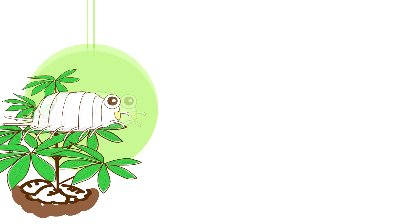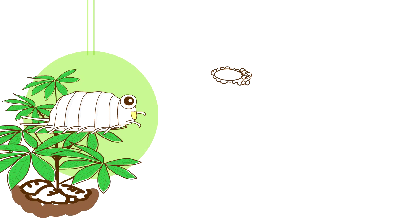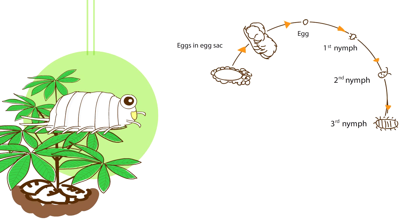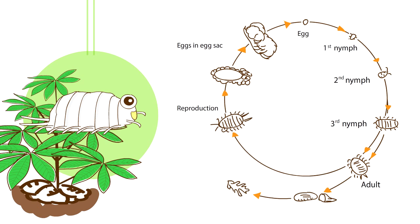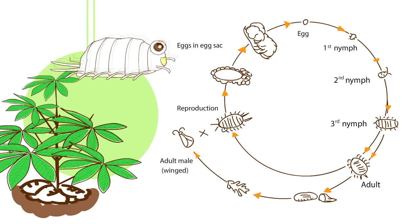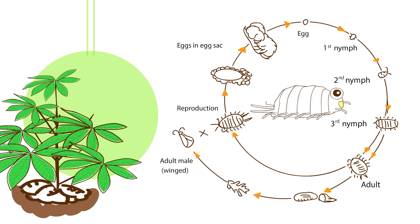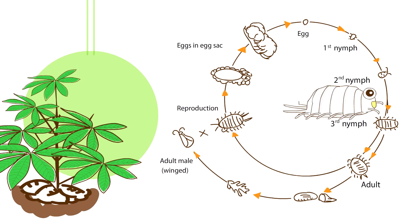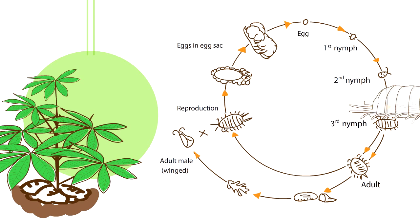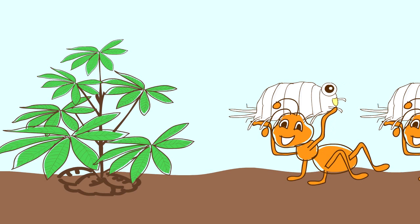Mealybug is an important insect pest of cassava in Thailand. Adult mealybugs can lay 100 to 500 eggs in egg sacs, which develop into the first nymphal stage within eight days. The nymphs molt three times, so the insect has a life cycle of 21 days.